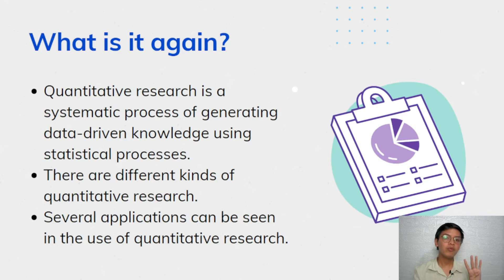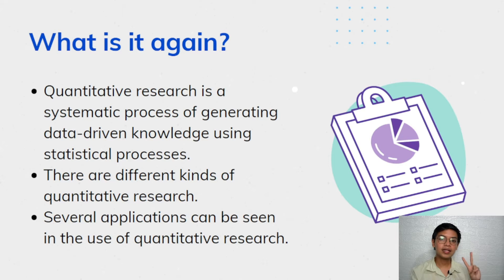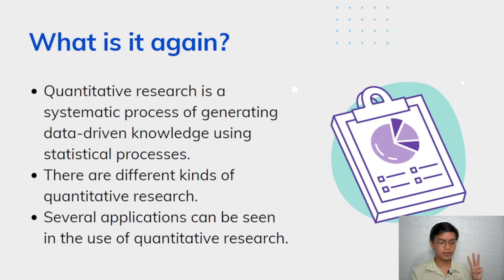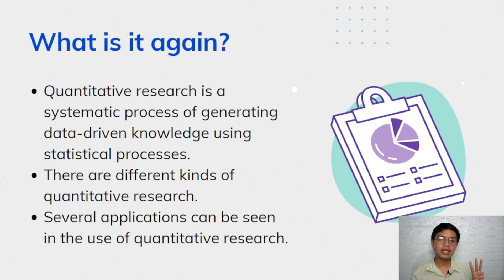I hope you remember them. We have descriptive research, which focuses on the what, or the general characteristic of a certain population. Second is correlational research, which tries to establish or seek the relationship of two or more variables. Third is causal comparative, also known as ex-post facto research, which looks into the cause and effect relationship of two or more variables without randomly grouping them and without manipulating any variables.